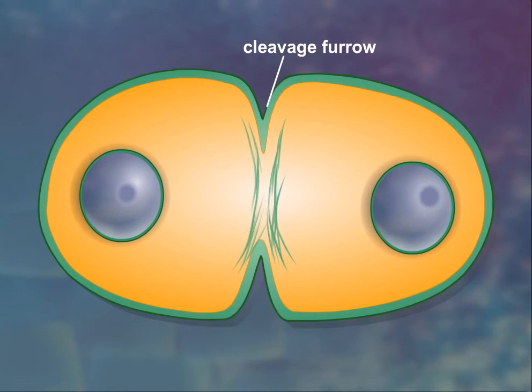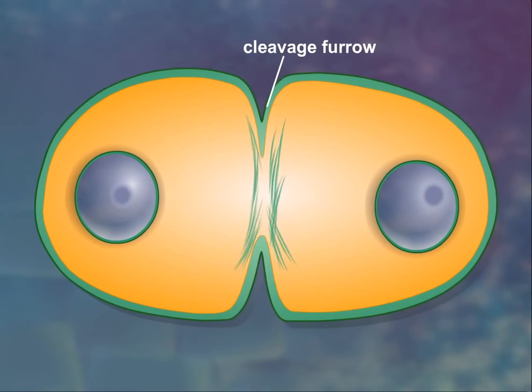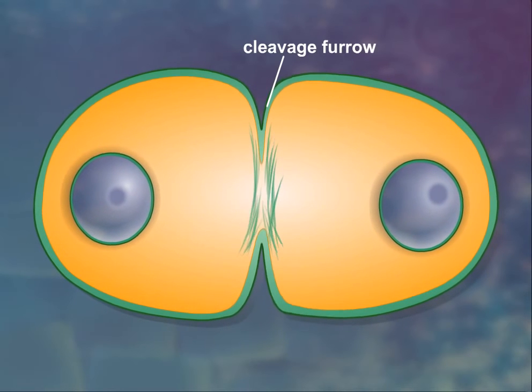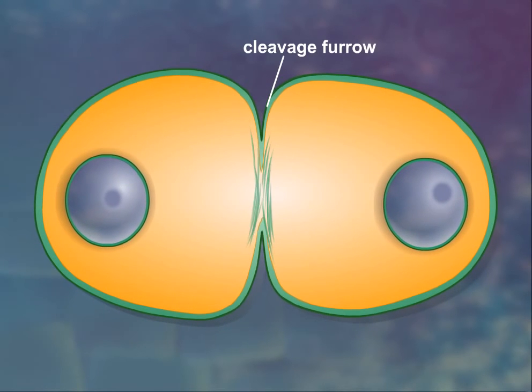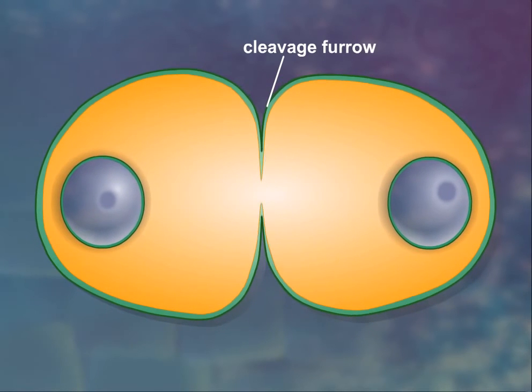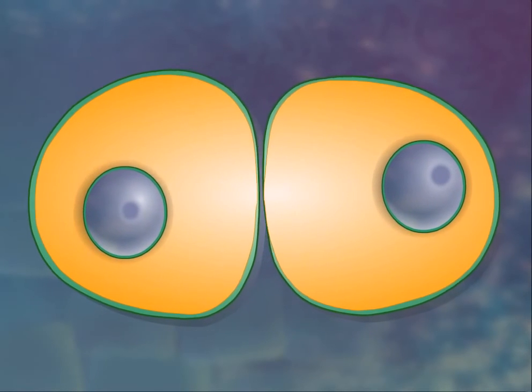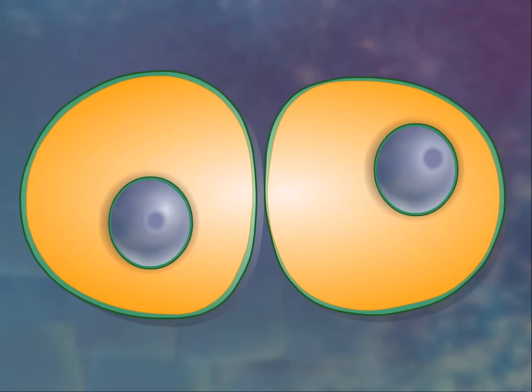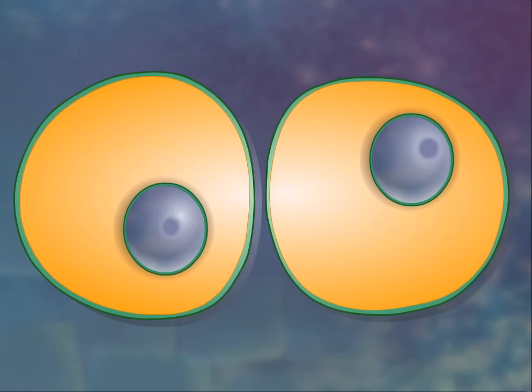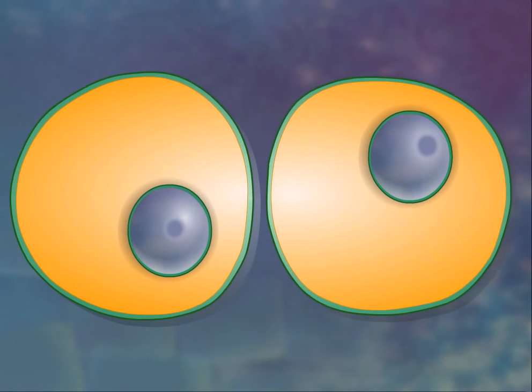Constriction proceeds and the furrow deepens until it eventually slices all the way into the center of the cell, at which point the cell divides in two.